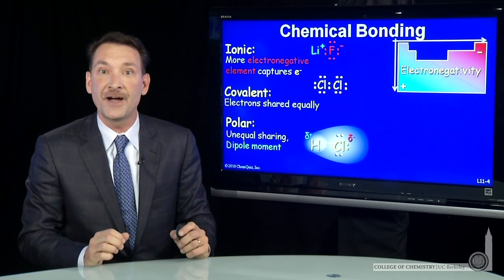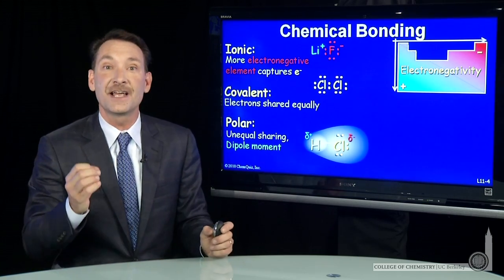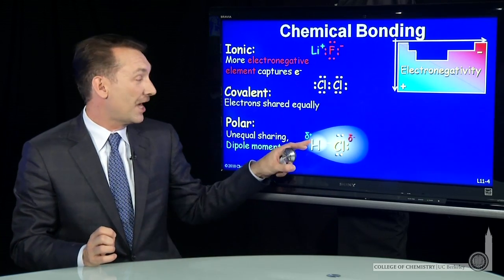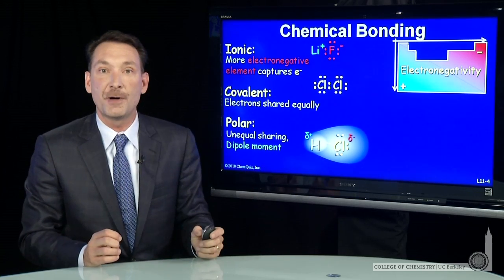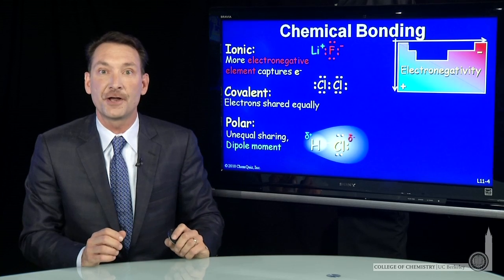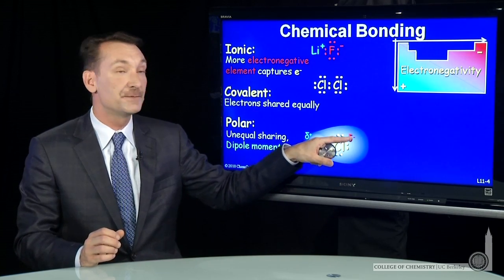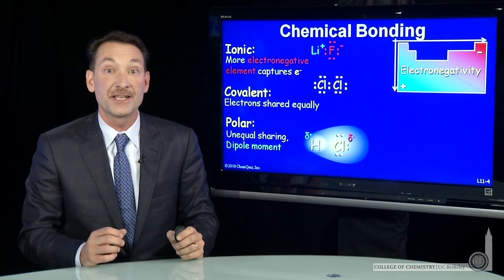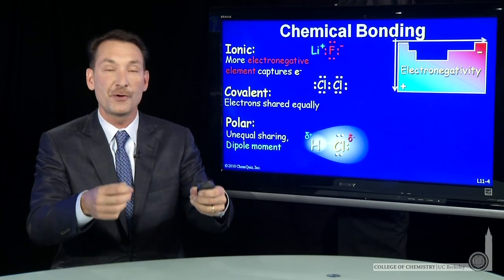There's a higher probability of finding the electron around the chlorine, which gives the chlorine a slight negative charge and the hydrogen a slight positive charge. So the hydrogen end of the molecule is slightly positive and the chlorine end is slightly negative. That partial charge separation, which we denote by partial negative and partial positive symbols, gives rise to what we call a dipole moment — a charge that's separated in space.